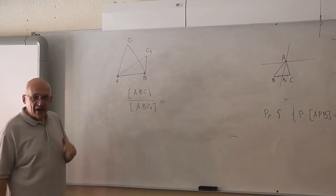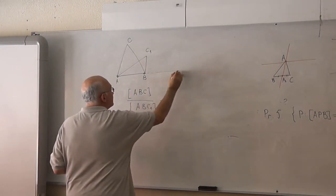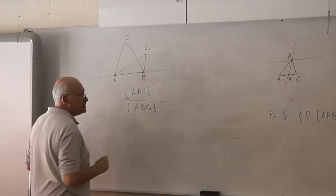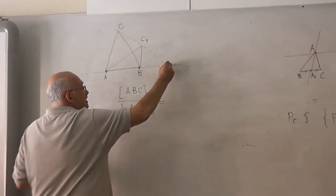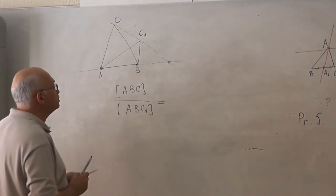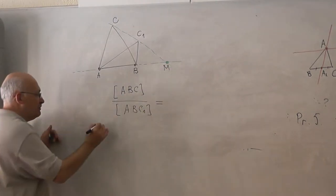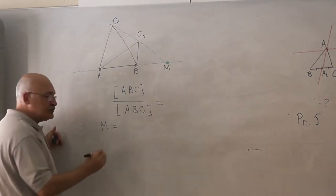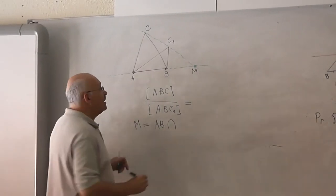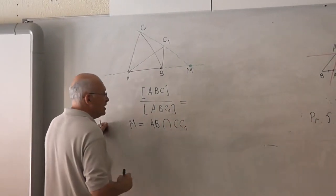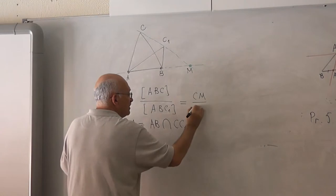To find this picture, we do the whole thing. We extend the line, if necessary, maybe if not, but in my drawing, if necessary. We extend the line CC1. We take the intersection. Let it be M, point M. M is the intersection of two lines. Then the ratio is equal to CM divided by C1M.